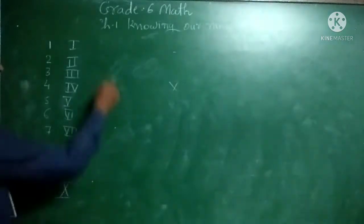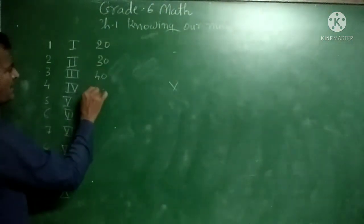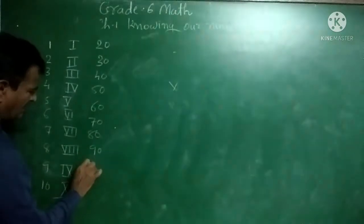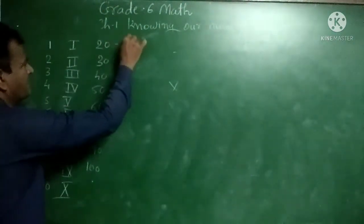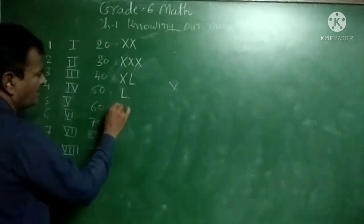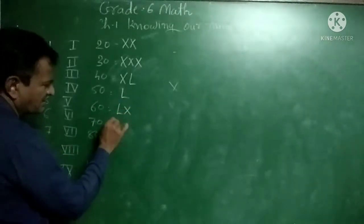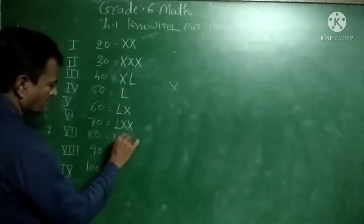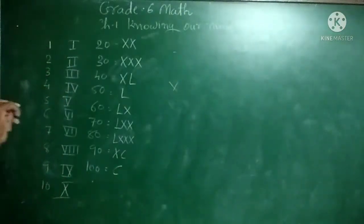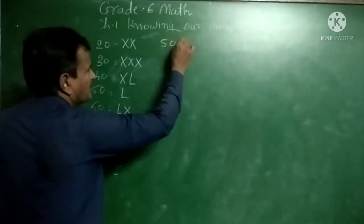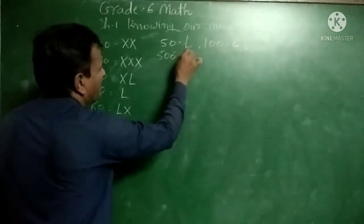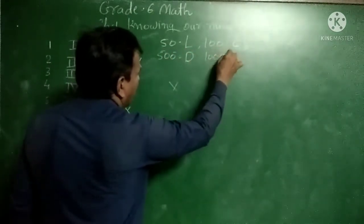For 20 we write XX (double X). For 30 we write XXX. For 40 we write XL. For 50 we write L. For 60 we write LX. For 70 we write LXX. For 80 we write LXXX. For 90 we write XC. For 100 we write C. For 500 we write D. And for 1000 we write M.